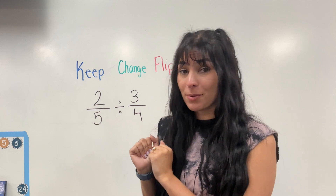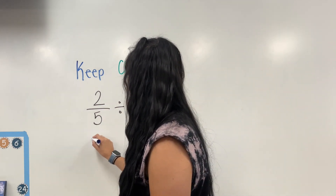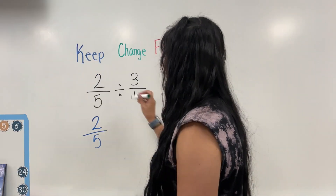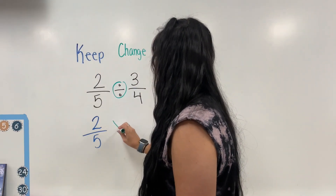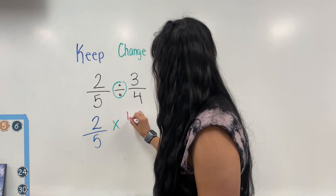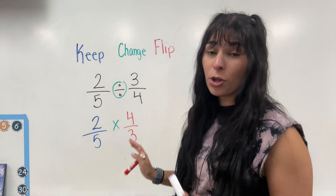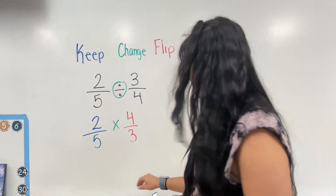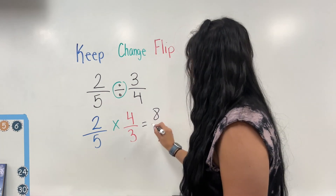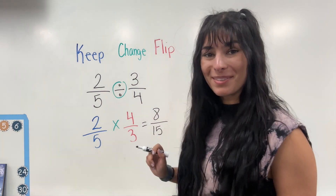Let's go ahead and solve this one together. I'm going to keep the two fifths, change division to multiplication, and then flip the three fourths into four thirds. From here, all you have to do is multiply across like you normally would. Four times two equals eight, five times three is 15.